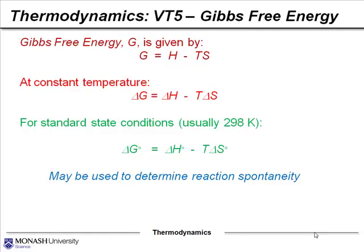At constant temperature, ΔG = ΔH − TΔS. For standard state conditions, usually at 298 Kelvin, ΔG° = ΔH° − TΔS°. Most importantly, it's the Gibbs free energy which may be used to determine spontaneity — whether or not a reaction is spontaneous.